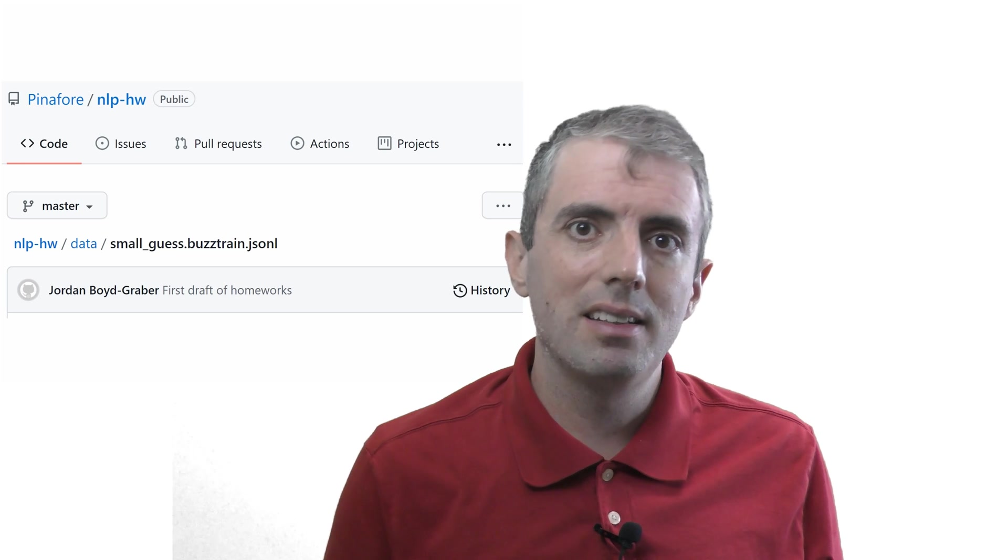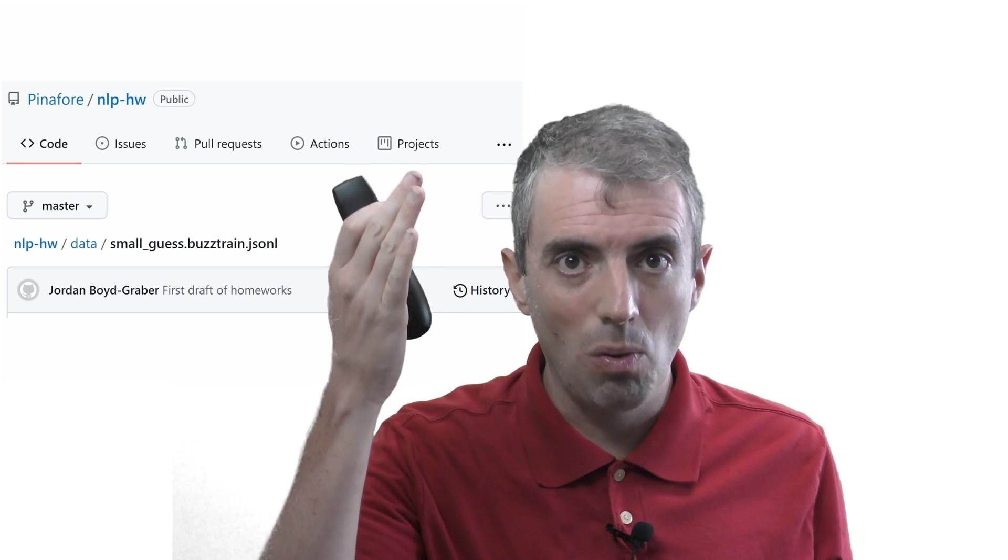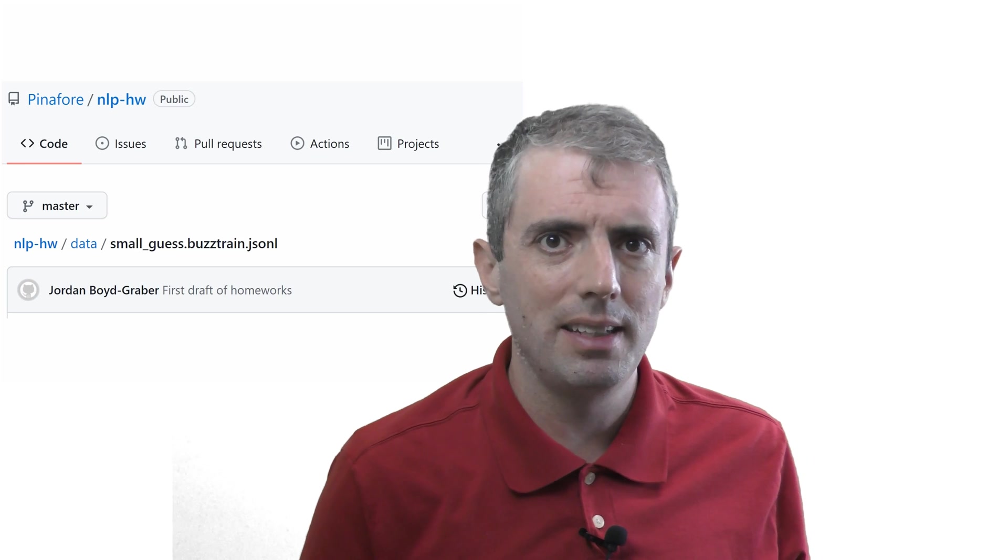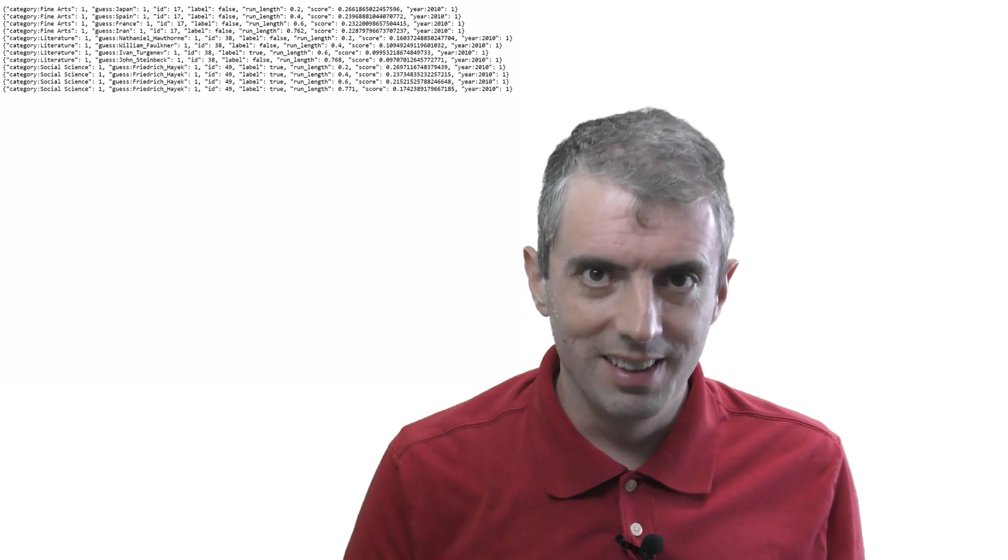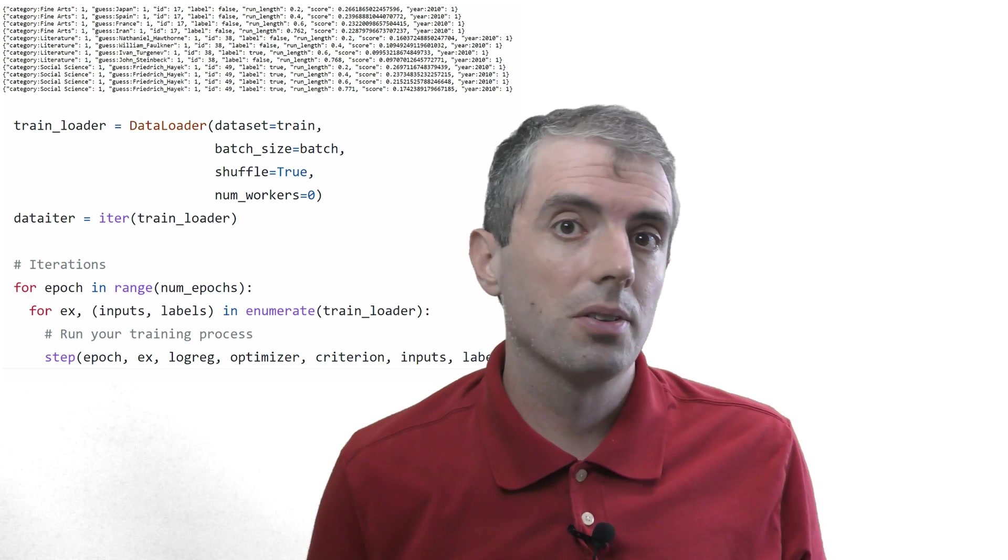And you'll be using that later to do feature engineering to decide when to trust the output of your guesses. There's also an example of what that output looks like in the data directory, where it's called buzztrain.jsonl. The jsonl extension means that it's one json object per line. Let's take a look at the data. These are the predictions of a guesser. This is the data you'll use in the feature engineering homework to build a buzzer. The big idea of that homework is to create a classifier that will do a better job of figuring out which guesses are right or not, in other words, a buzzer.